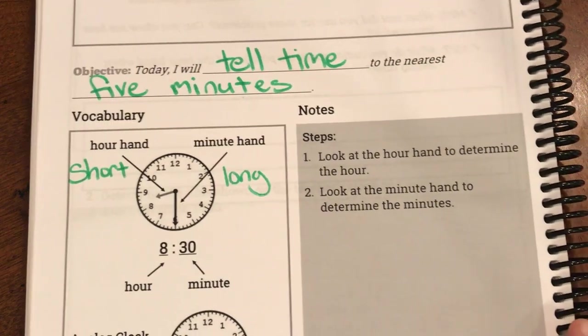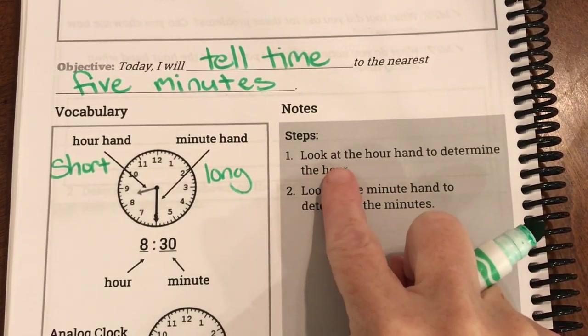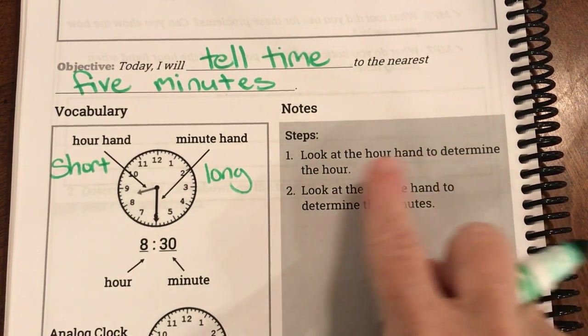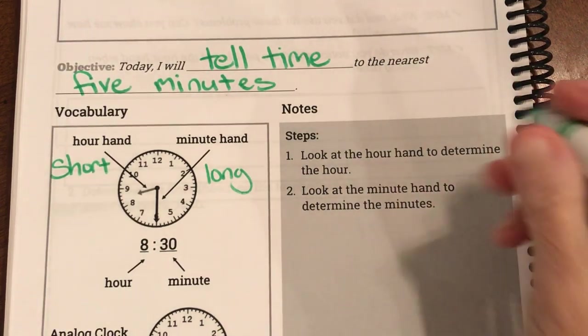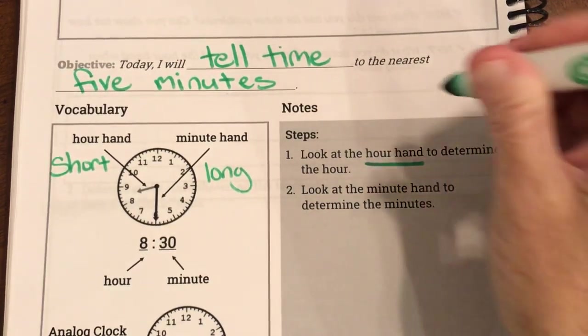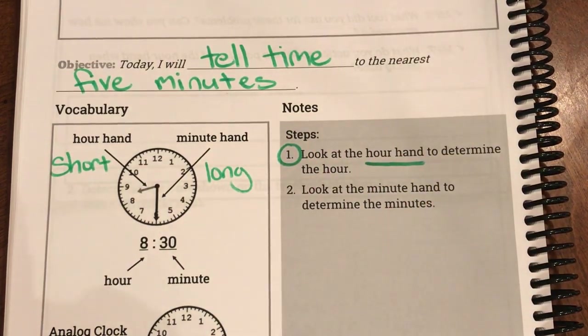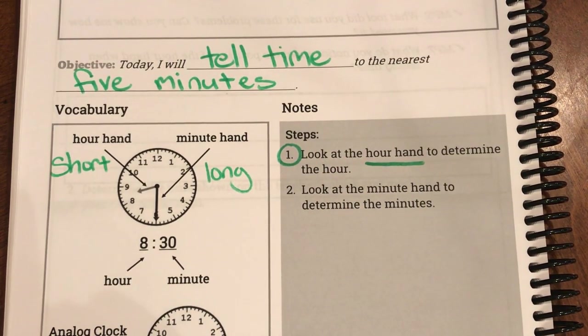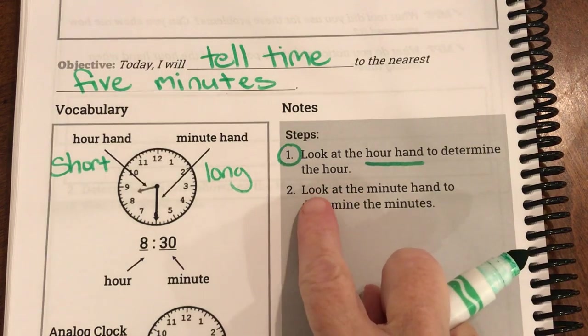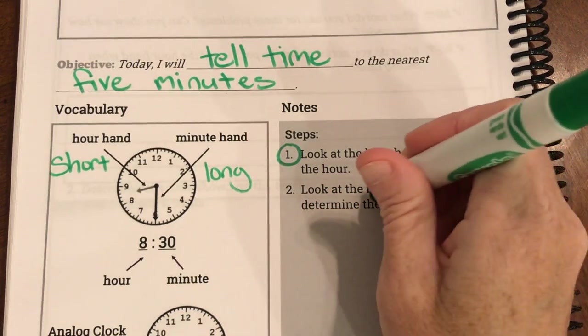Our steps today say we're going to look at the hour hand to determine the hour. So we always do the hour hand first. We always first look at our hour hand.